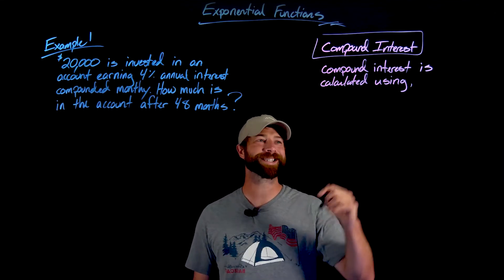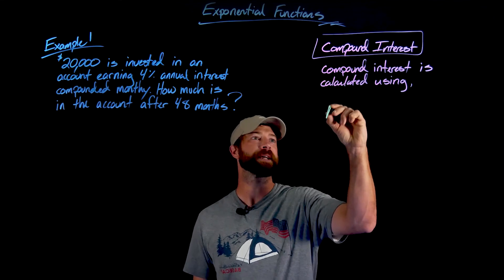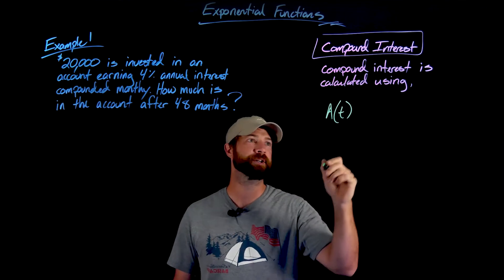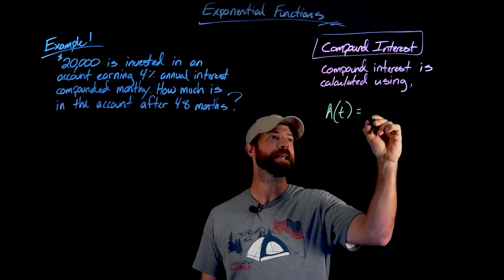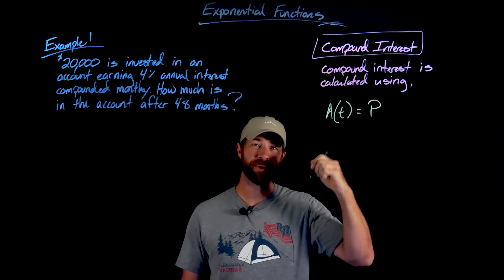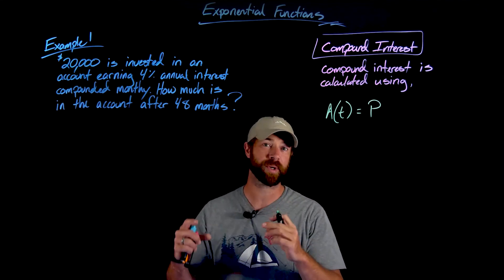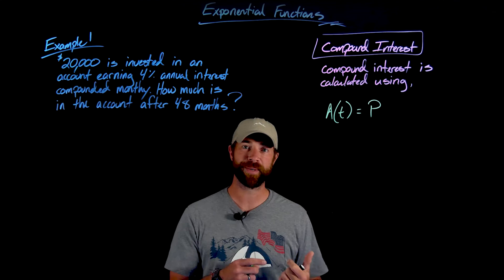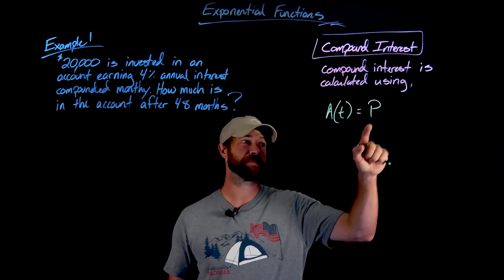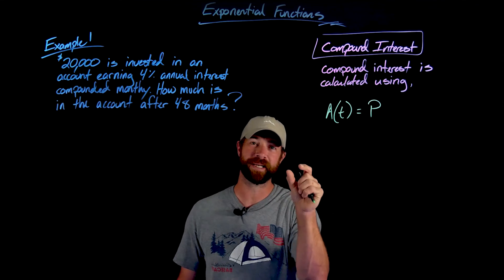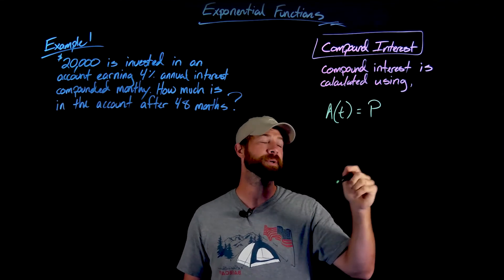So the formula for us that computes compound interest is A(t). A(t) represents the amount in account, t is going to be in terms of years in this case, equals P. This is your principal amount, or the starting amount. In this situation that's going to be $20,000. In that general form of exponentials we were just talking about, P is exactly the same thing as that A value, that starting initial amount you get when your independent variable is zero.